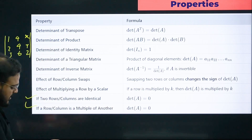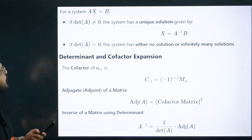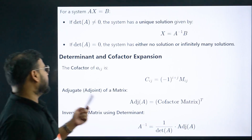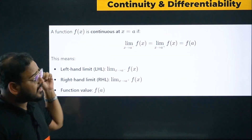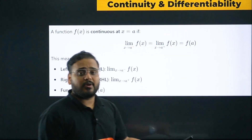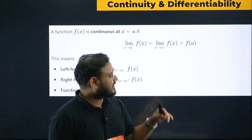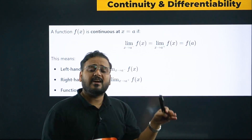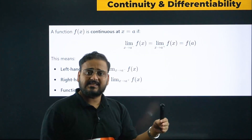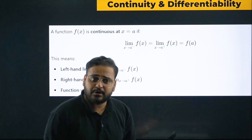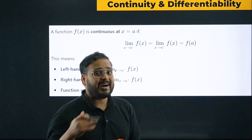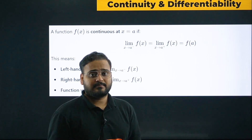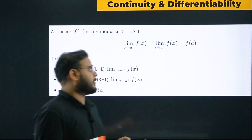Determinant cofactors are also very important. I've compiled formulas for all chapters — almost 150+ slides in these notes. You have to go through and revise all of them. If you can, print out the notes or use an iPad with a pen, and mark the formulas you most want to remember.